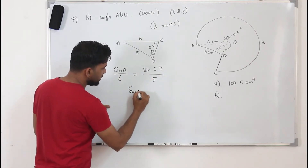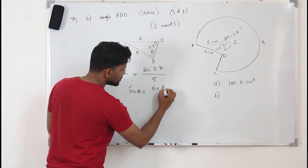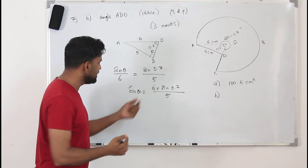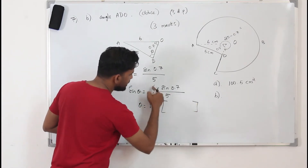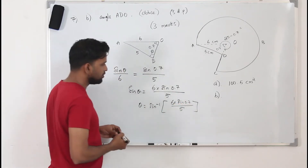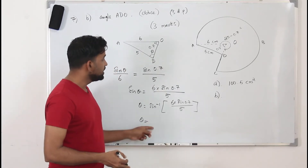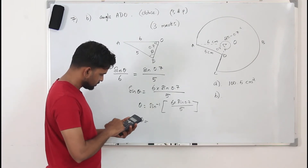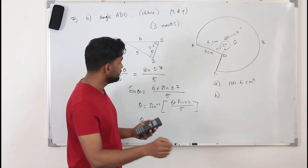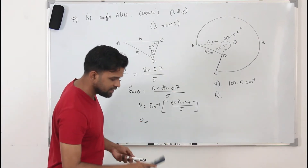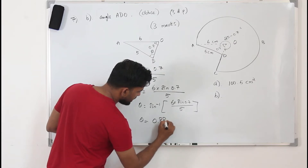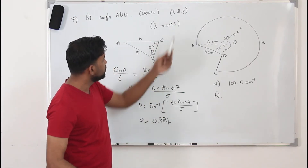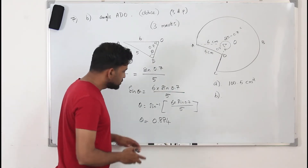Rearranging, sine theta equals 6 times sine 0.7 divided by 5. Theta is the sine inverse of that value, which is 6 times sine 0.7 divided by 5. Use the calculator to find theta and write the answer in three decimal places. When we key this in, our answer is 0.8836 something, so rounded to three decimal places it is 0.884.